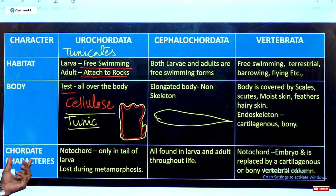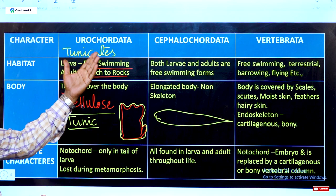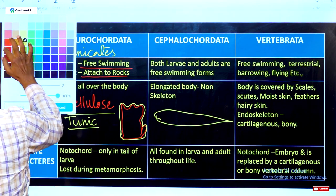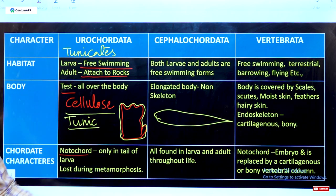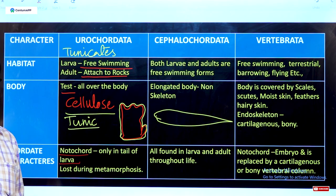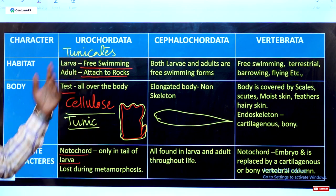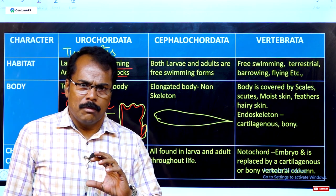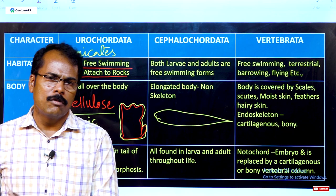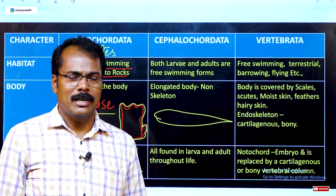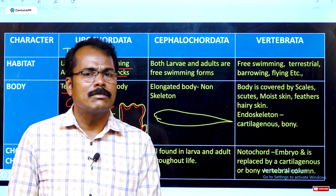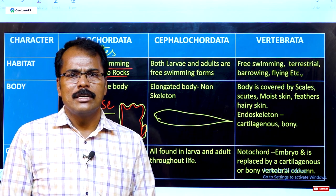The chordate characters in Urochordata, Cephalochordata, and Vertebrata are as follows. In Urochordata, the notochord is found only in the tail of larvae and is lost during metamorphosis. A special characteristic is retrogressive metamorphosis — morphological changes that go from higher development to lower development — which is why adult urochordata cannot swim and instead attach to the substratum or rocks.